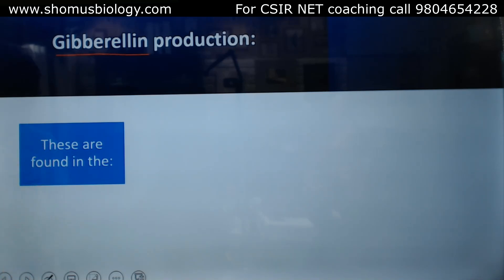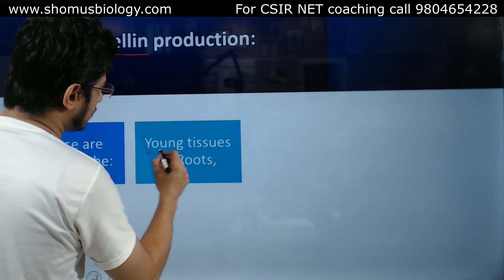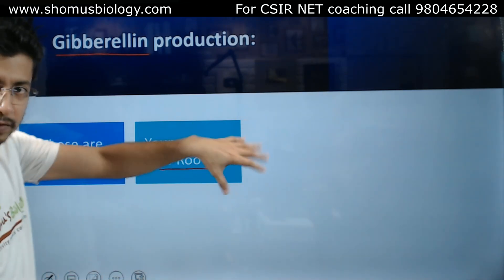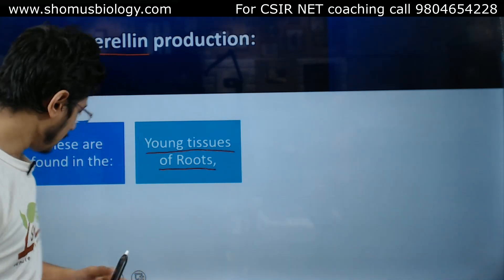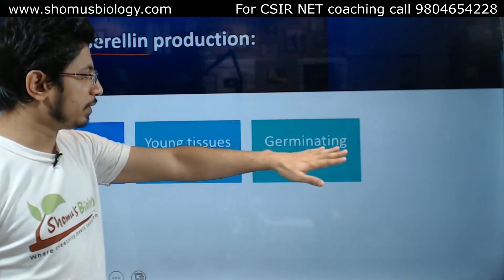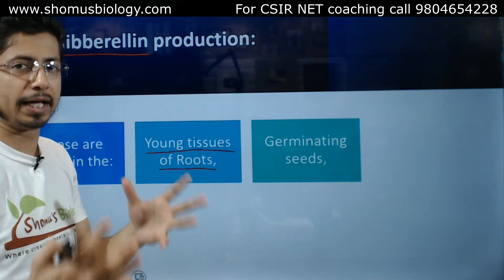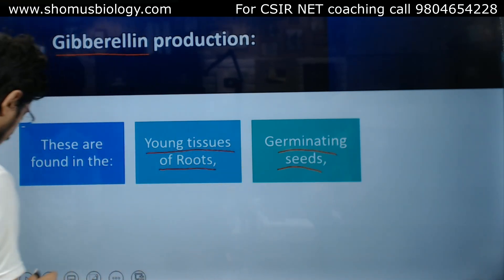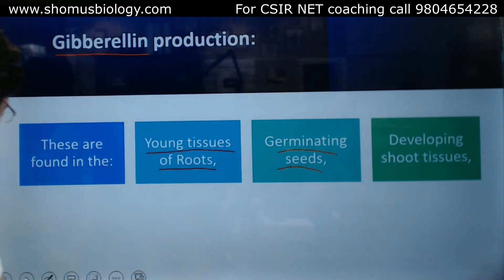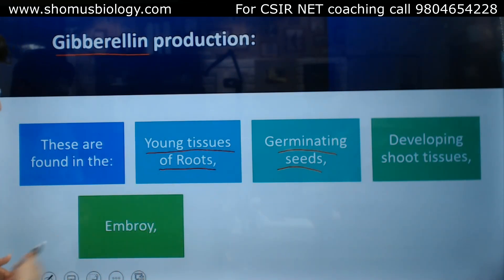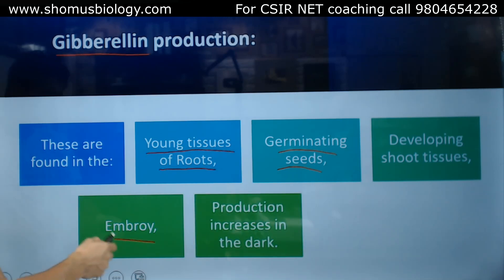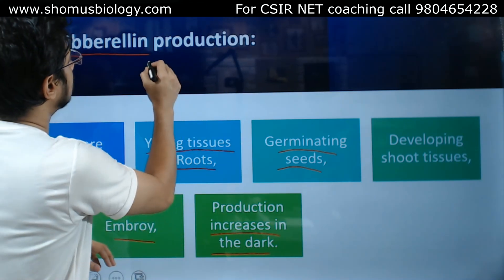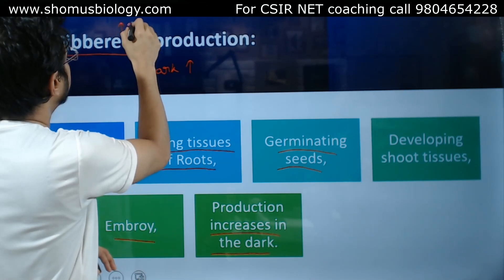Gibberellic acid is present in young tissues as well as young tissues of the root. The location of gibberellic acid production is always young roots. Second, it's also found in germinating seeds. These are the two places where gibberellic acid is found in higher concentration. It's also found in developing shoot tissues, but at lower levels than in roots and germinating seeds, and also in the embryo. Production increases in the dark, which is another important feature about gibberellic acid.